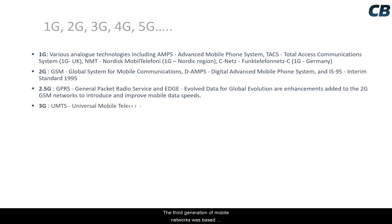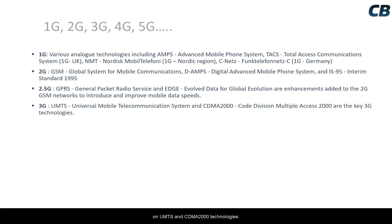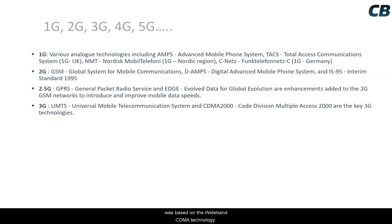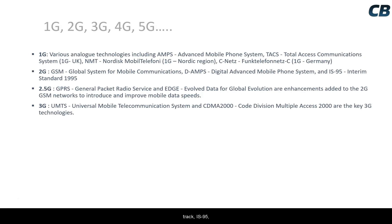The third generation of mobile networks was based on UMTS and CDMA2000. UMTS (Universal Mobile Telecommunication System) was based on Wideband CDMA technology and made use of network enhancements from GPRS and EDGE. UMTS was the 3G upgrade path for GSM networks. The 3G technology for the IS-95 track was CDMA2000, also known as IS-2000.